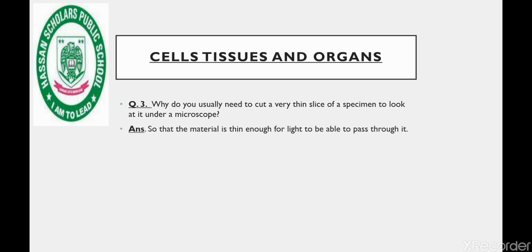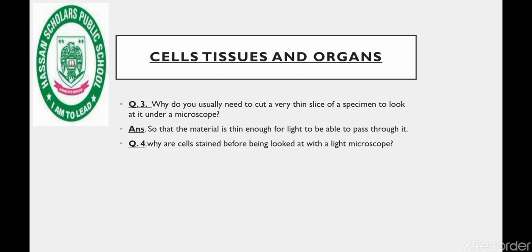The material must be thin enough for light to be able to pass through it. This allows us to see the different parts of a specimen, particularly the nucleus and other organelles of the cell.